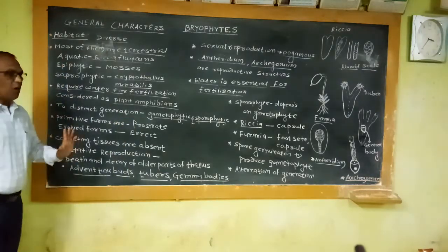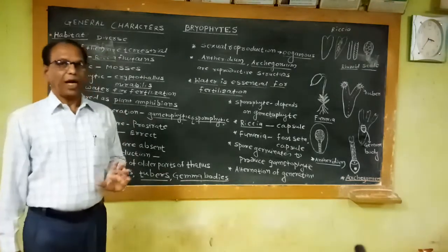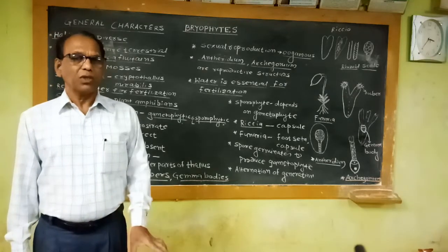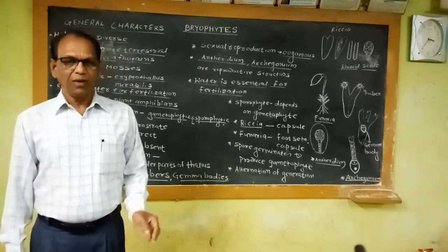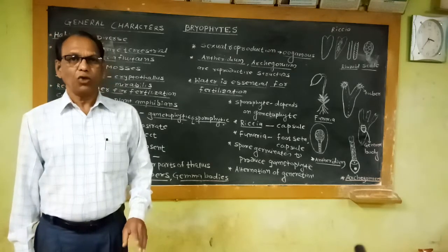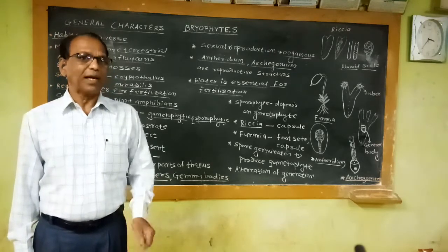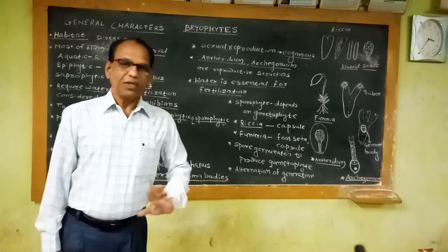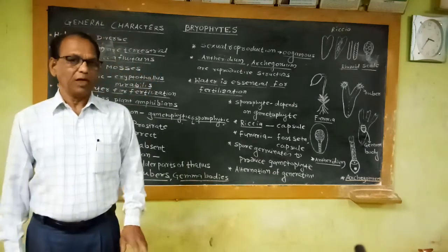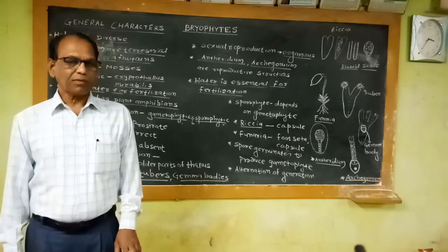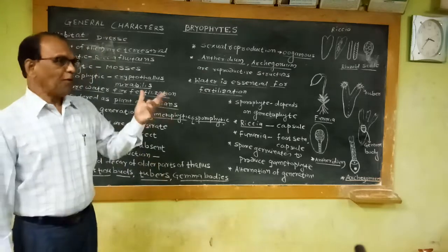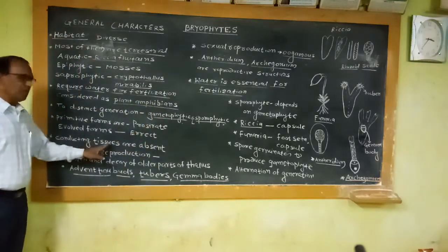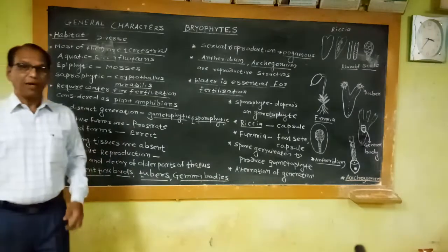If we observe the anatomy of bryophytes, the bryophyte shows simple tissue organization. The plant body of bryophyte shows only one type of tissue, that means parenchyma. There is no tissue differentiation in bryophytes, and all bryophytes lack conducting tissues like xylem and phloem.